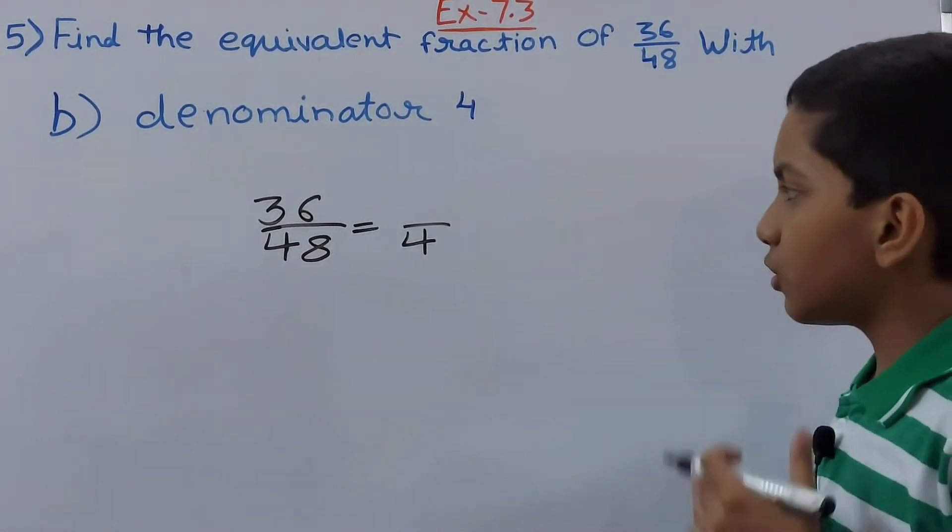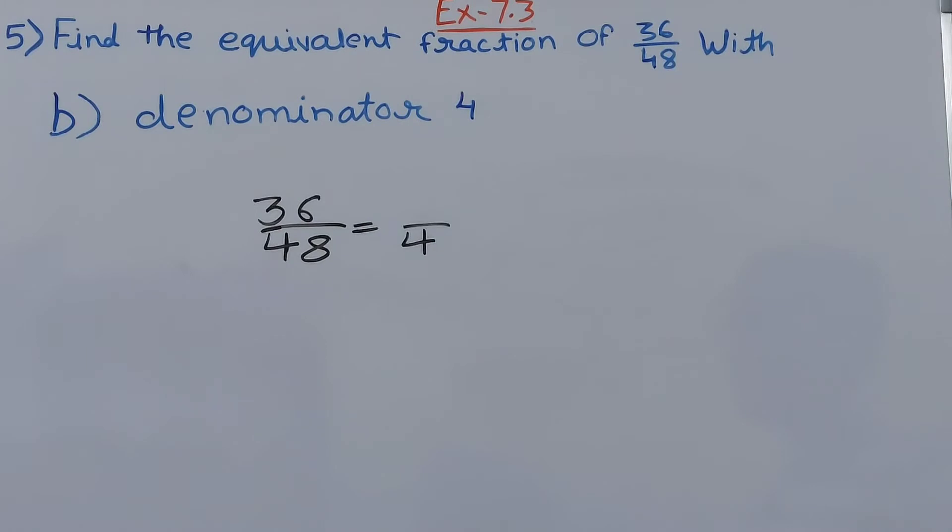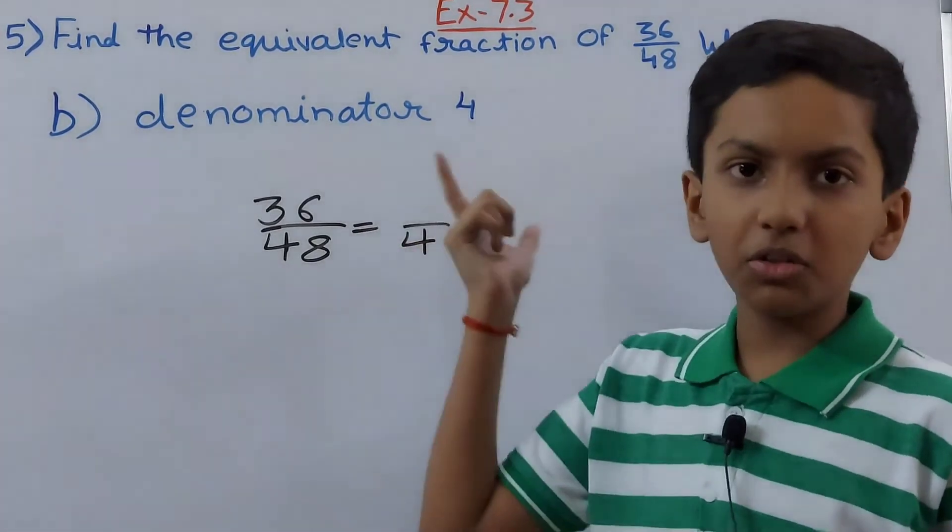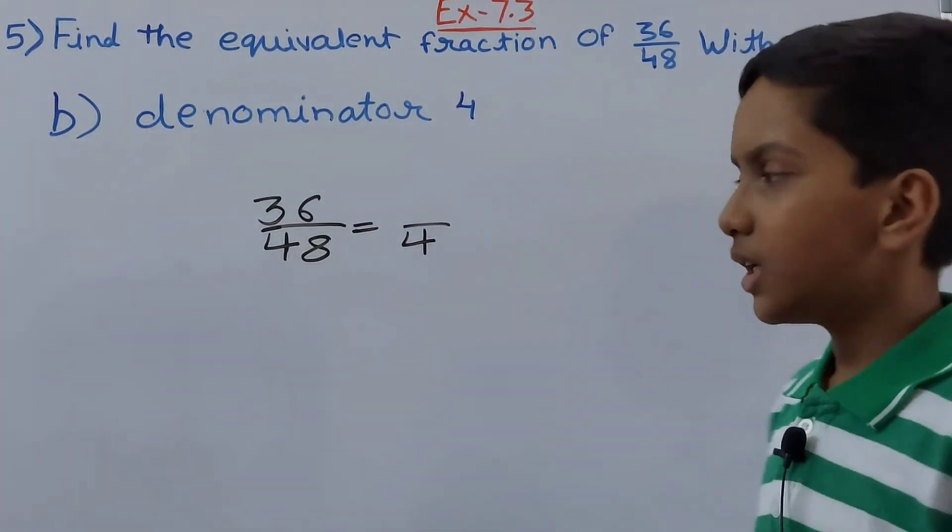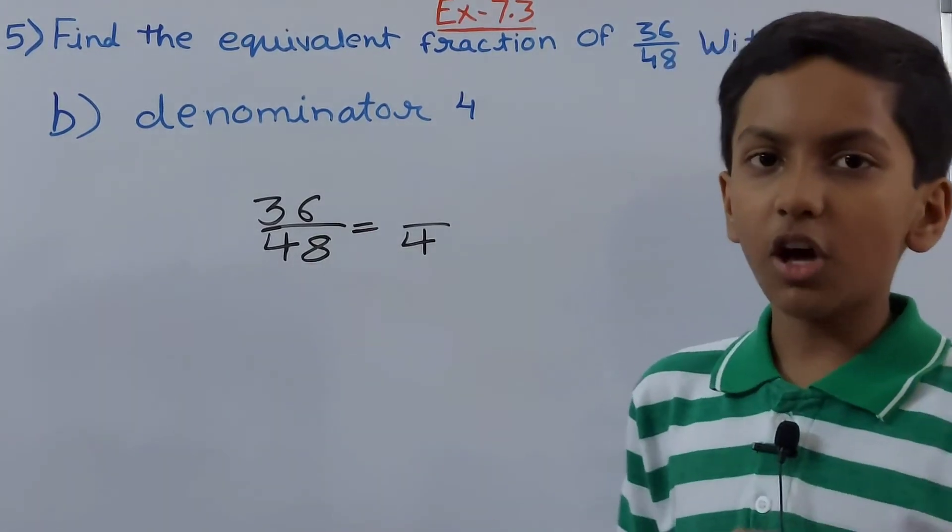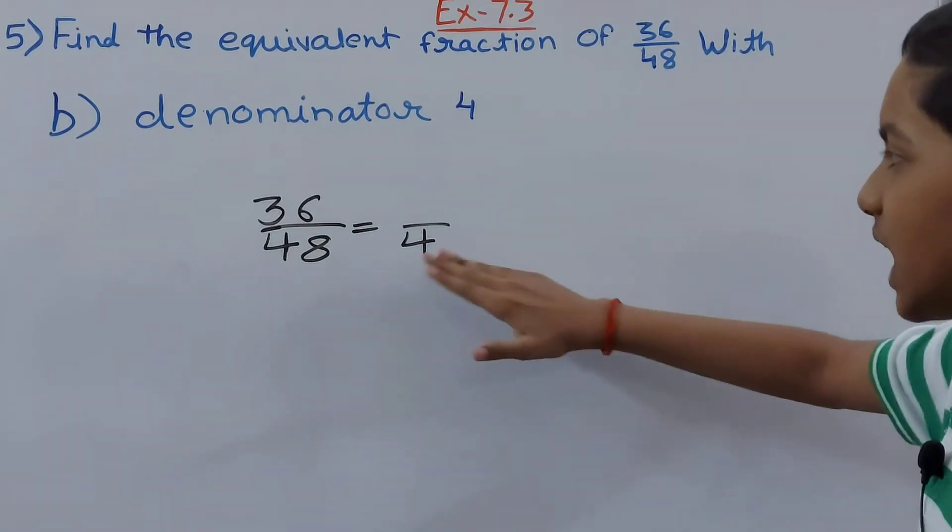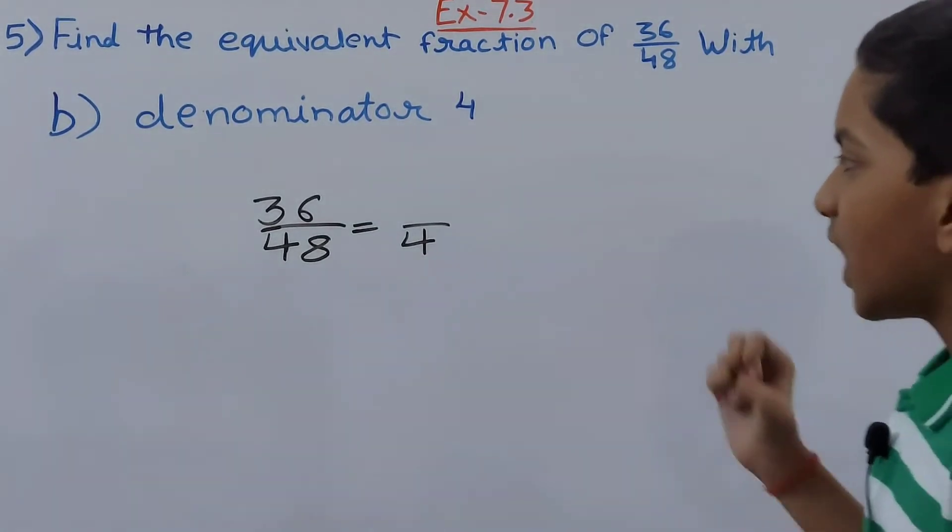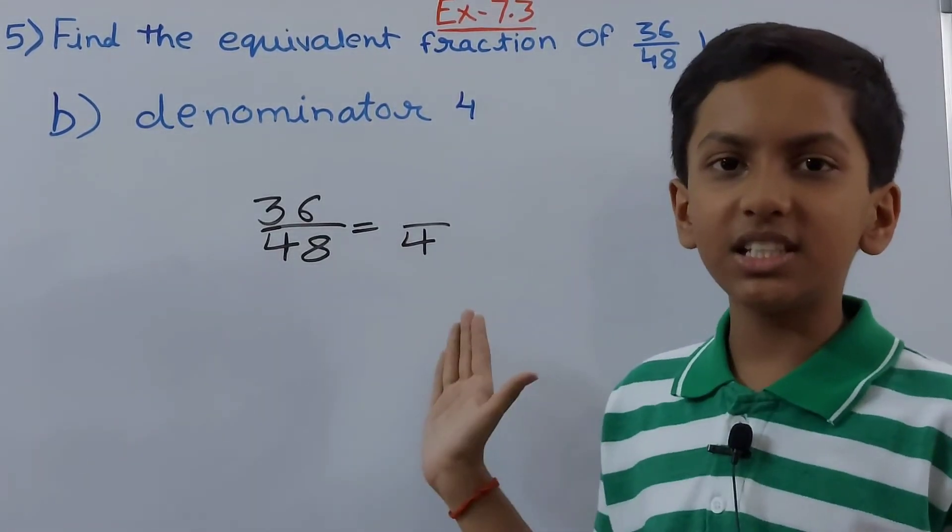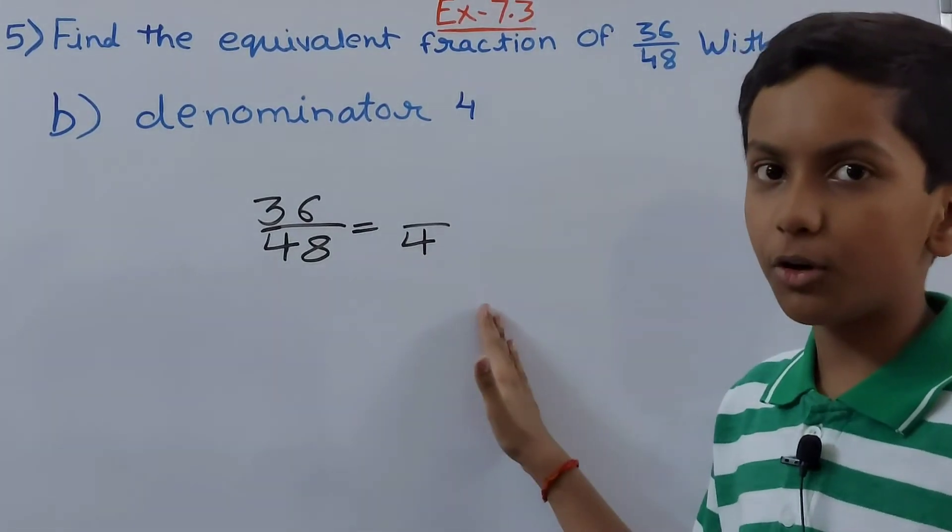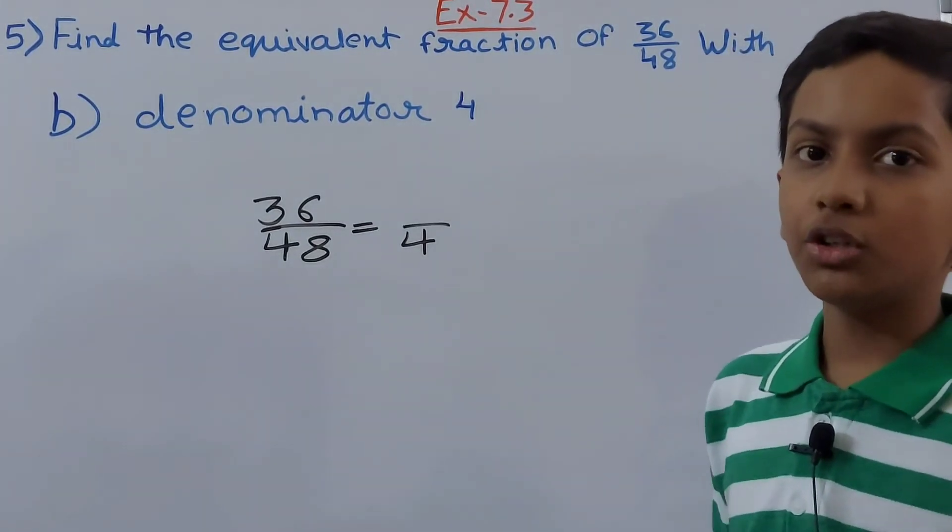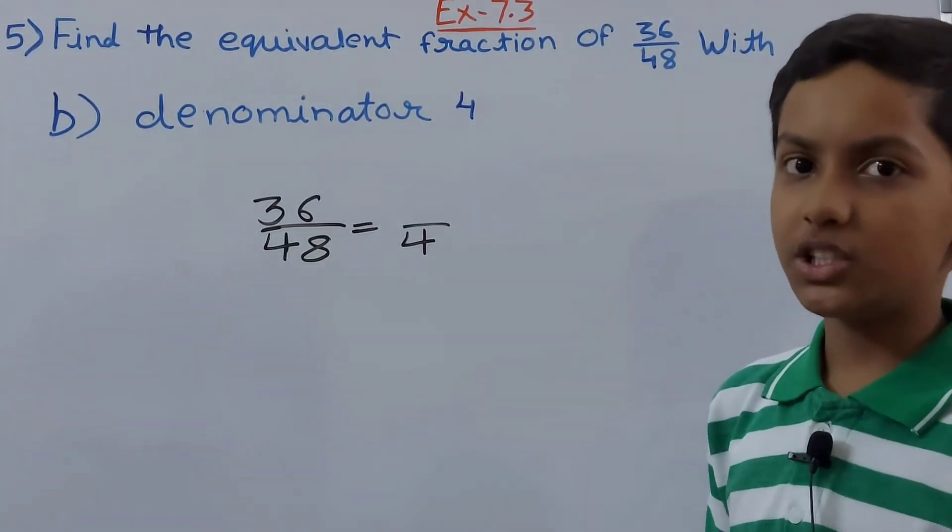You have to see which number. As we don't have the numerator here, we need to check by the denominators only. So we have 48 and 4. We need to know how many times will 48 go by 4. 4 into 12 is 48.